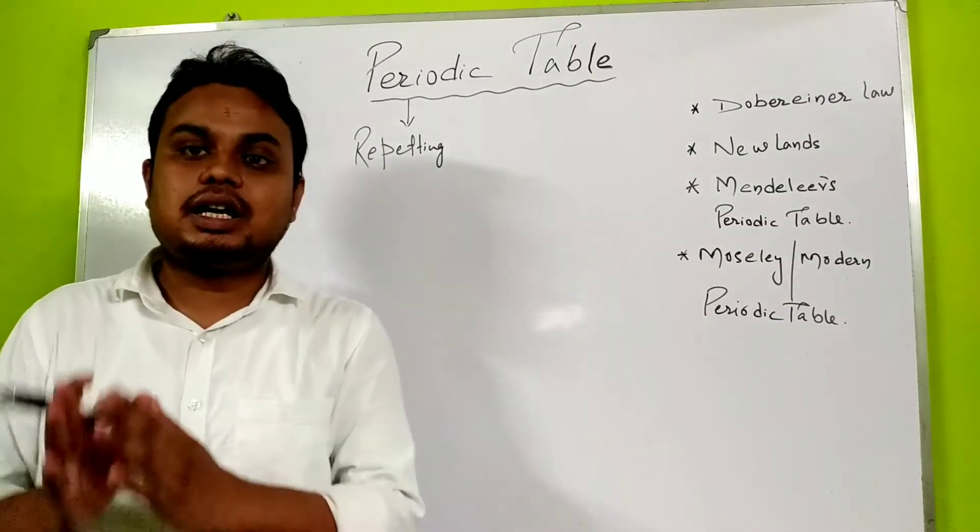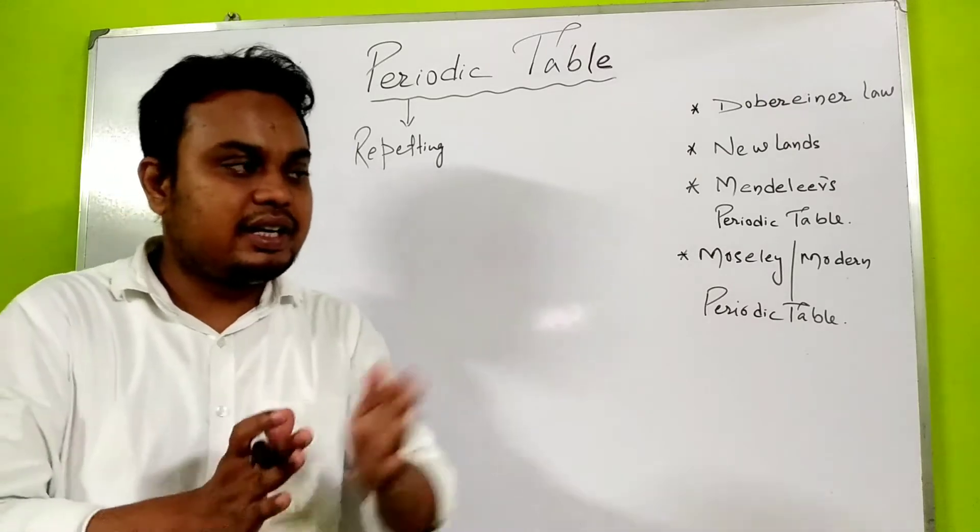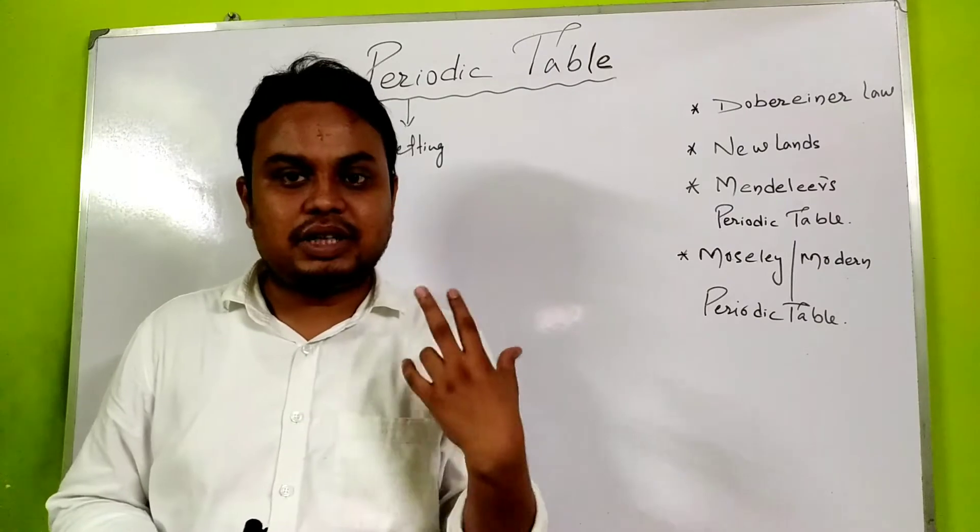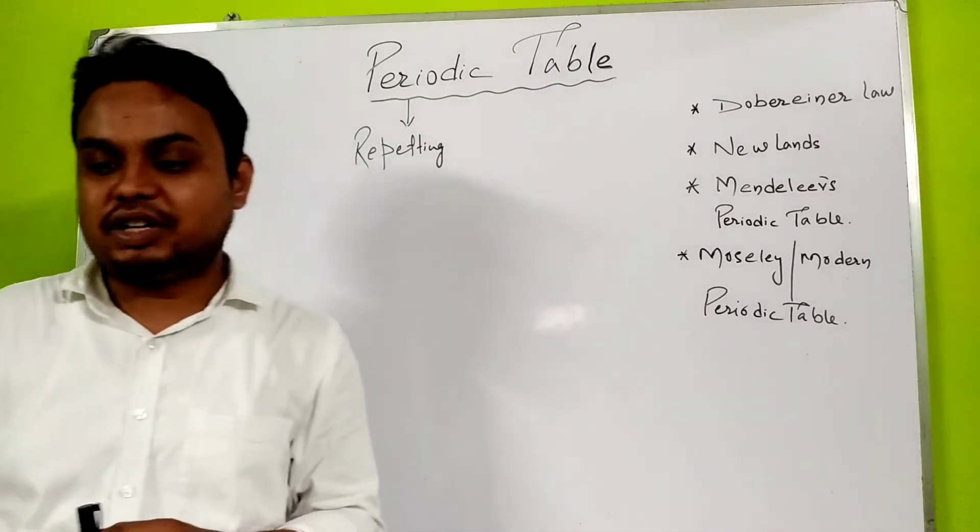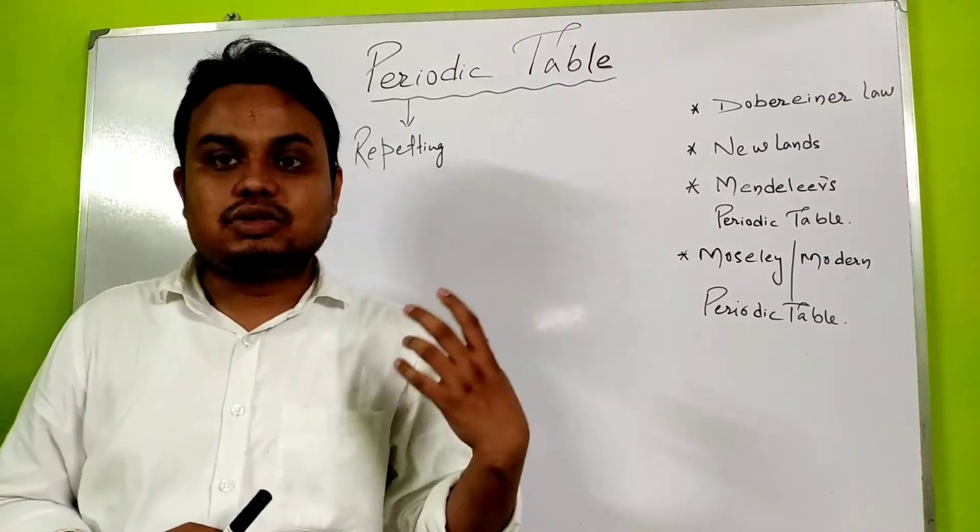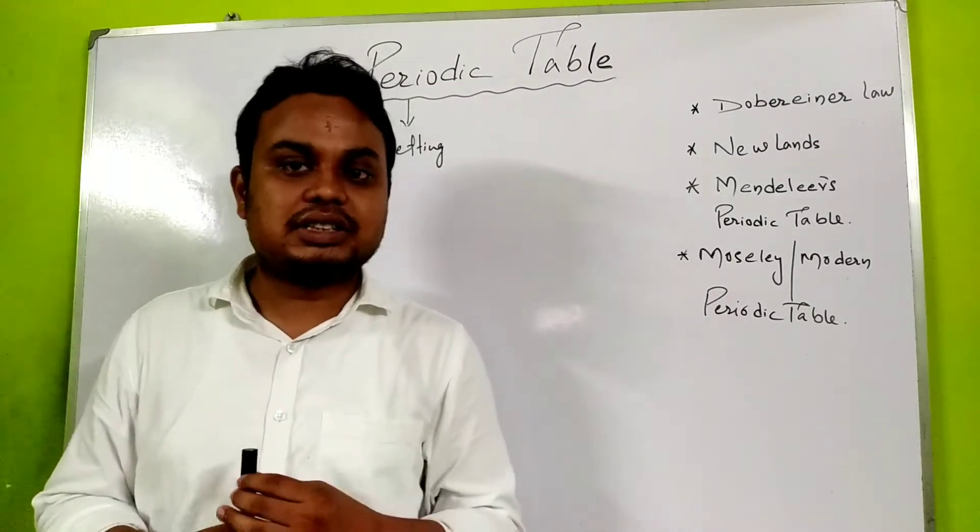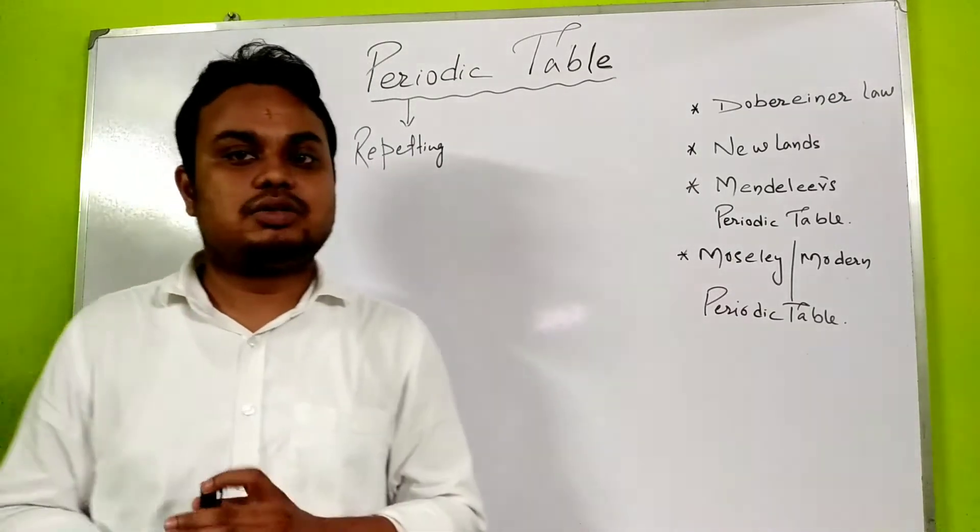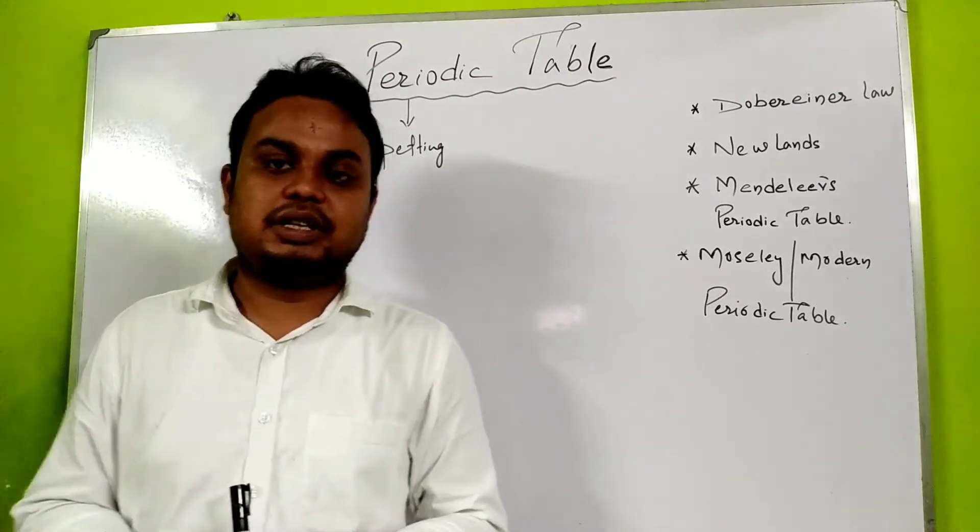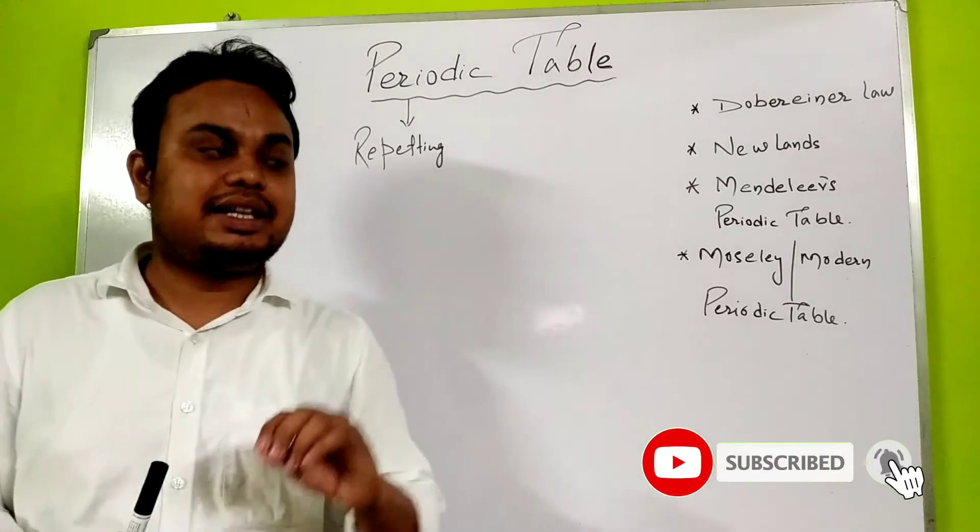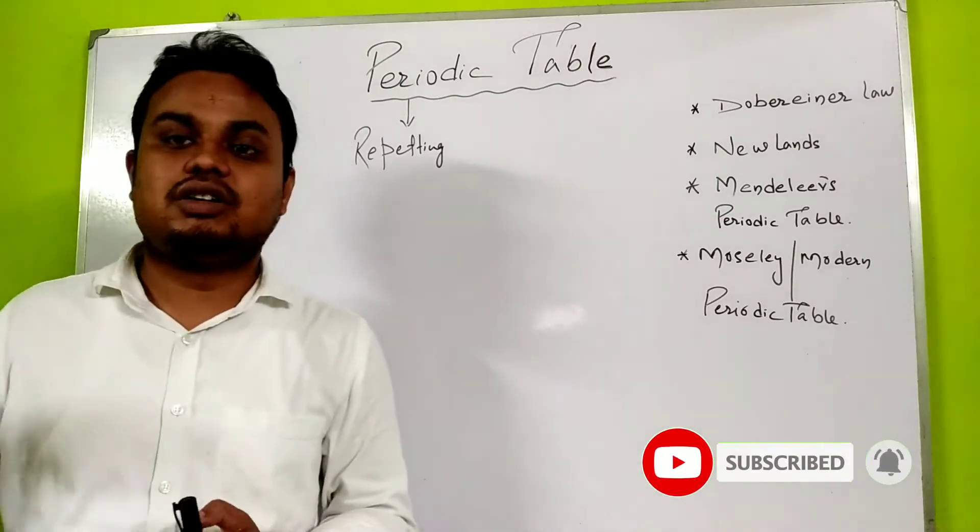We have two types of properties: physical property and chemical property. Physical properties we can test, see, measure, and observe. Chemical property means how an element reacts in reactions and how it behaves with other elements.